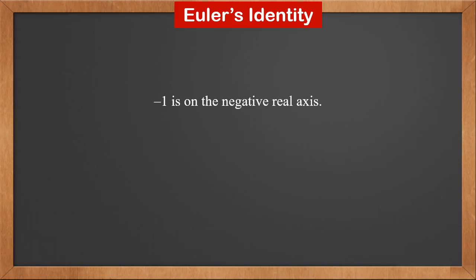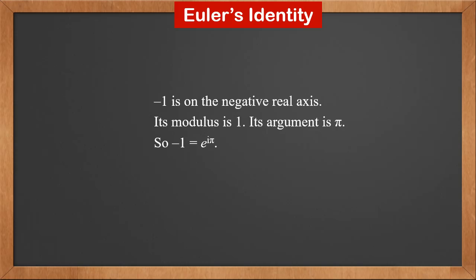Minus 1 is on the negative real axis. Its modulus is 1 and its argument is pi. So if we write minus 1 in exponential form, minus 1 is e to i pi. Moving minus 1, we get e to i pi plus 1 equals 0. This is called Euler's identity. E, i, pi, 1, and 0 are all important numbers, and this identity links them all together.